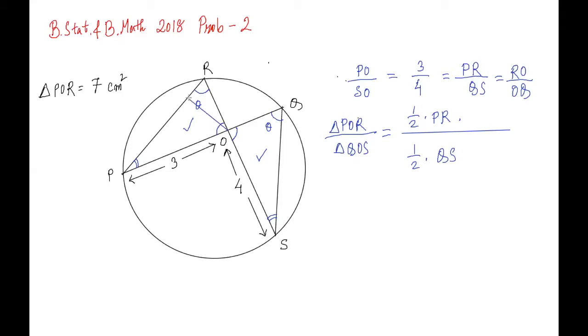Suppose we have these perpendiculars here. Let's denote them as X and Y. If you notice, triangle POX and triangle OSY are similar because this angle equals this angle, and one angle is 90 degrees, so the remaining angle is the same. If I have OX as my height and OY as the height of this triangle, the half and half cancel out.